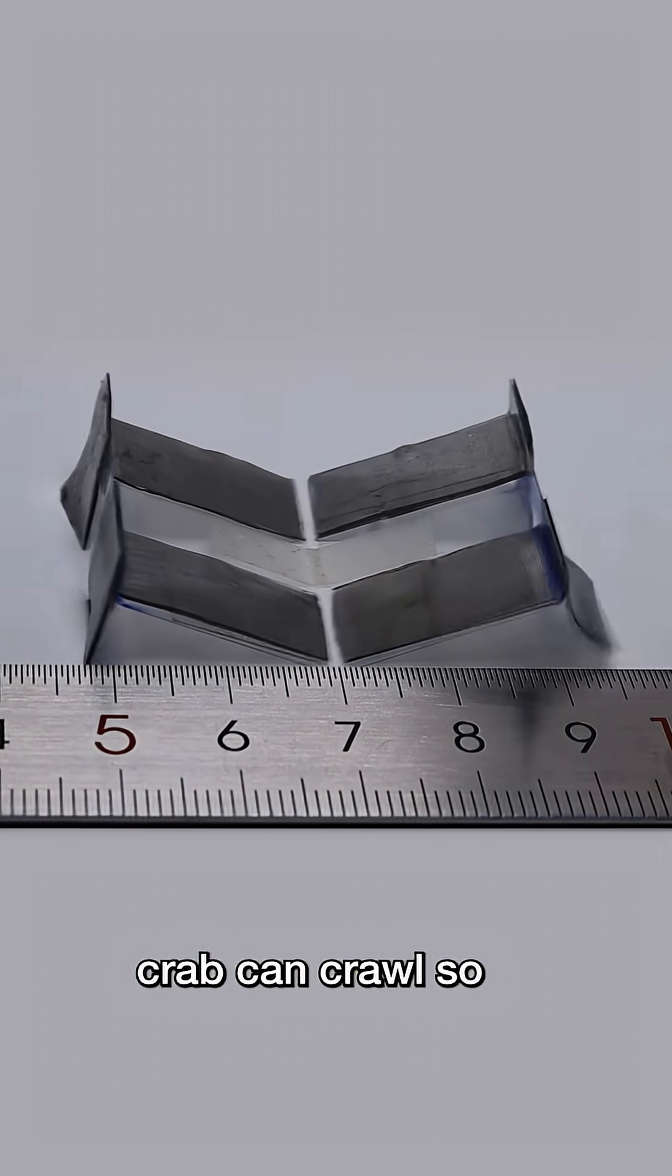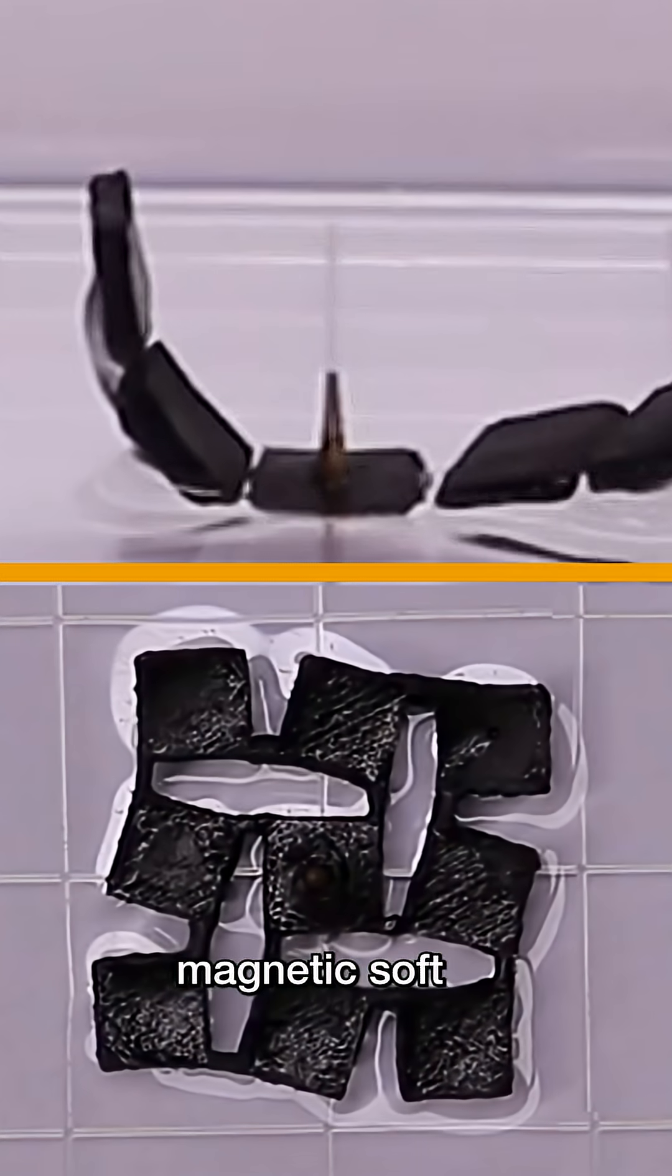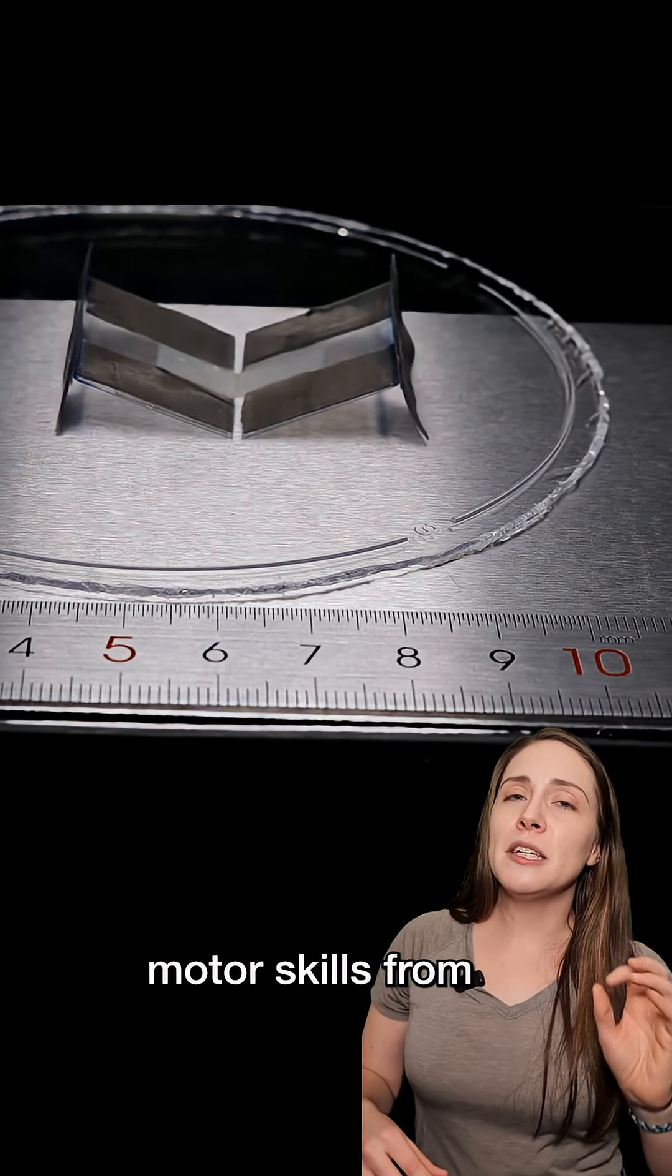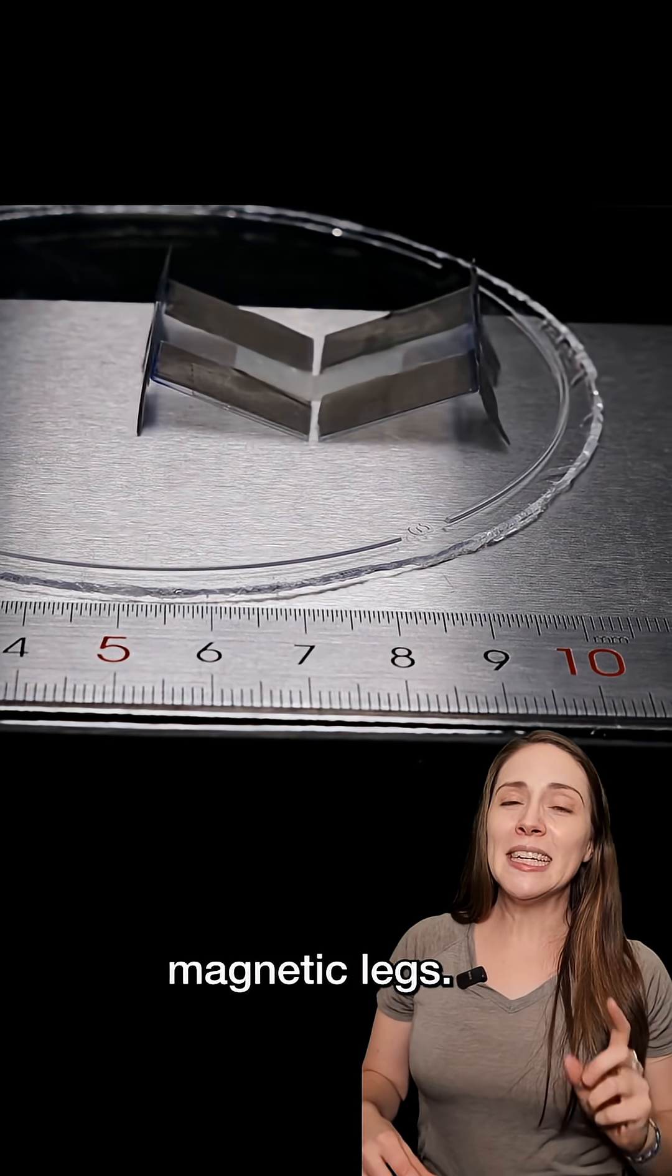This little magnetic crab can crawl so much faster than a lot of other magnetic soft robots out there. Look at these ones compared with this, which gets its motor skills from the microscale design of its magnetic legs.